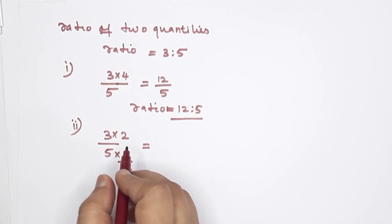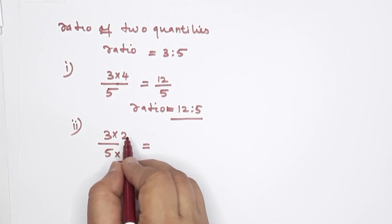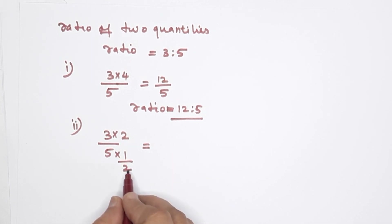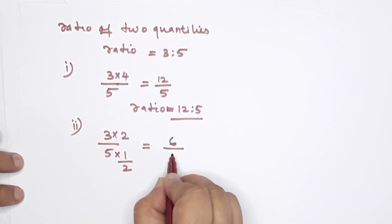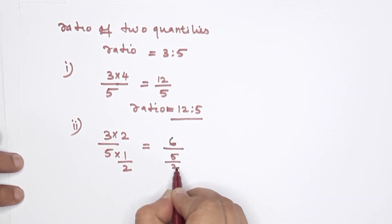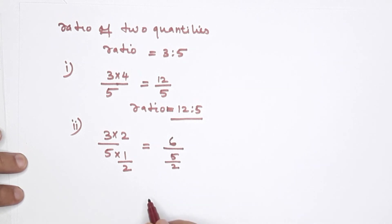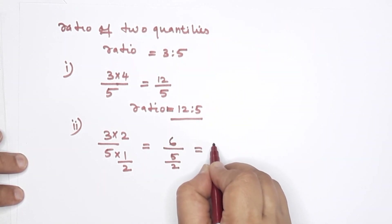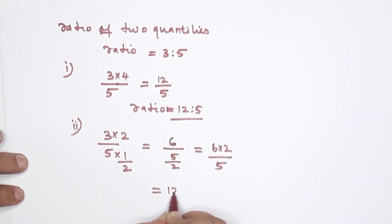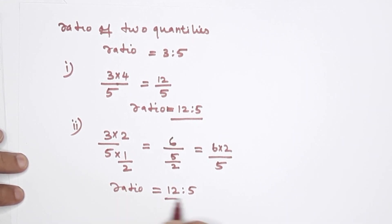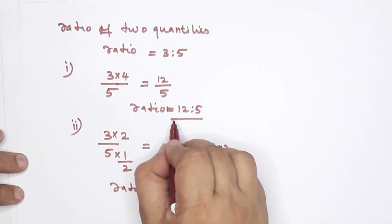Part B: if the smaller is doubled and the larger is halved, what would the ratio be? The smaller doubled gives 3 multiplied by 2 equals 6. The larger halved gives 5 by 2. So the new ratio is 6 to 5 by 2, which means 6 into 2 by 5. The ratio is equal to 6 is to 5 over 2.